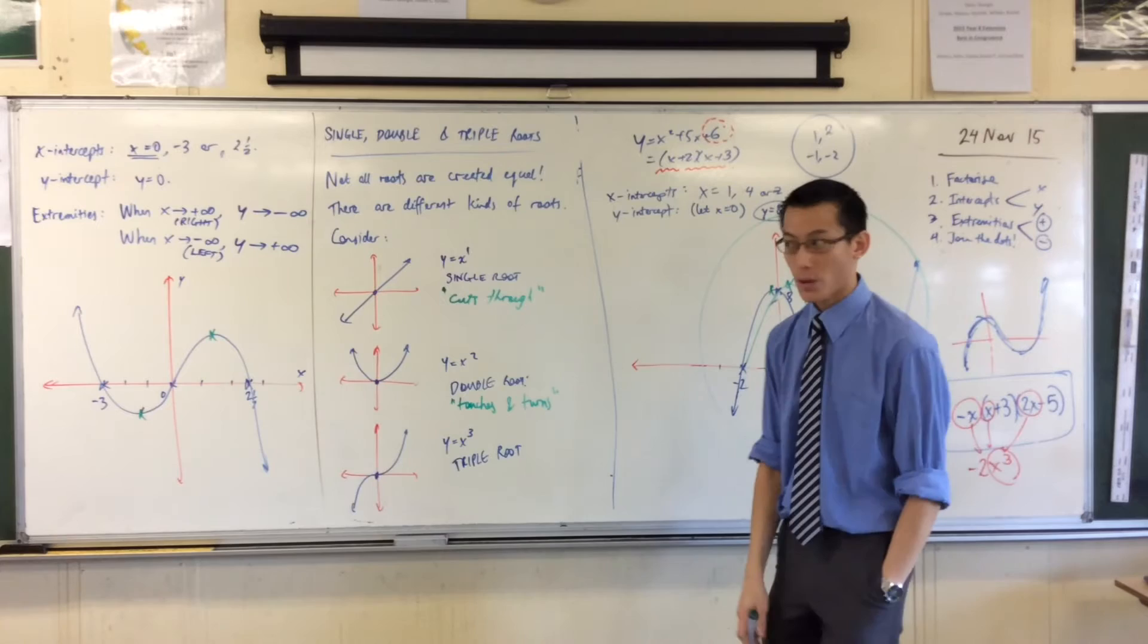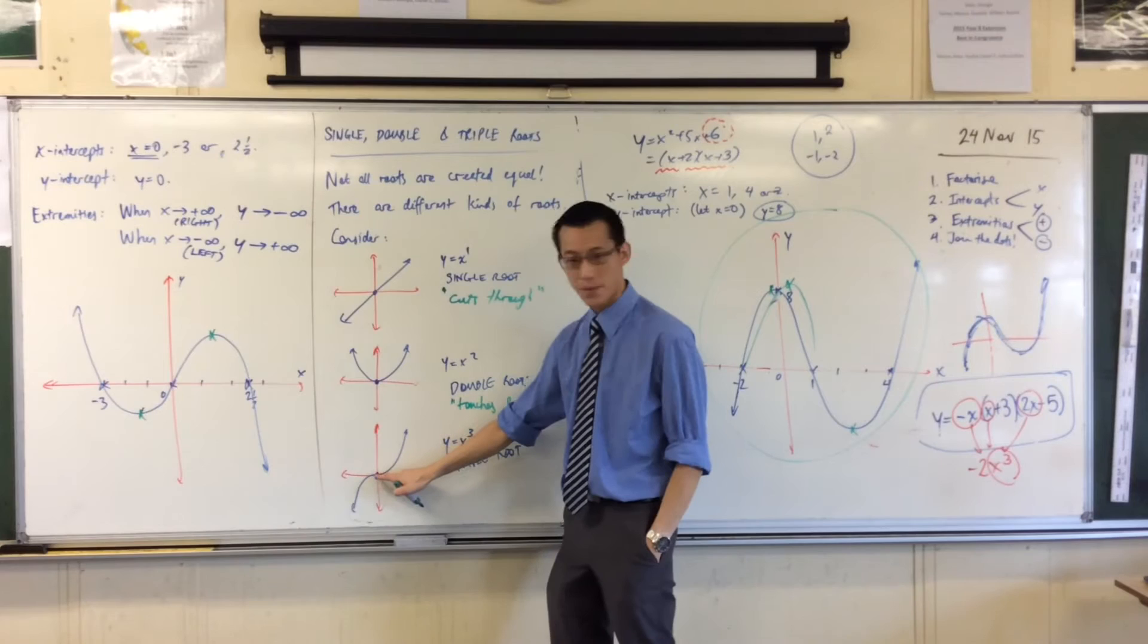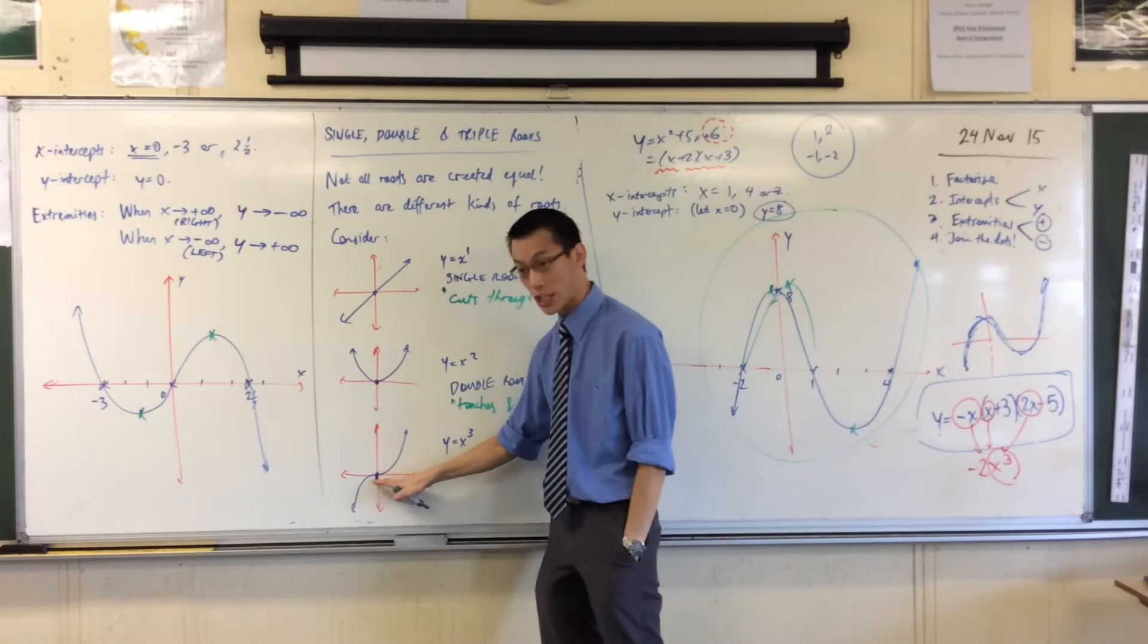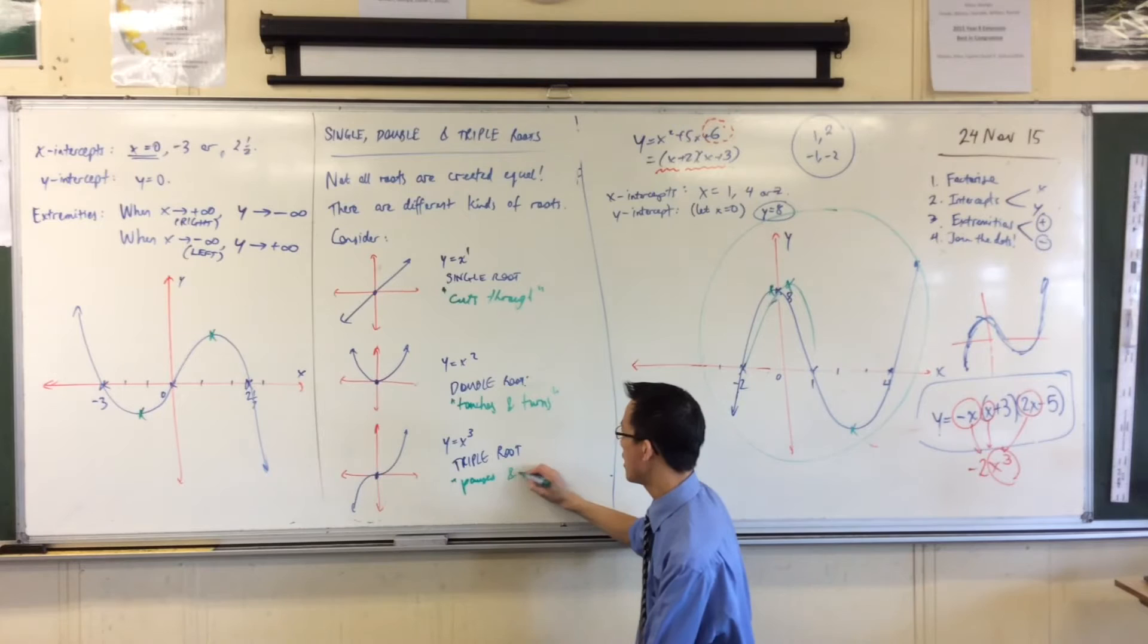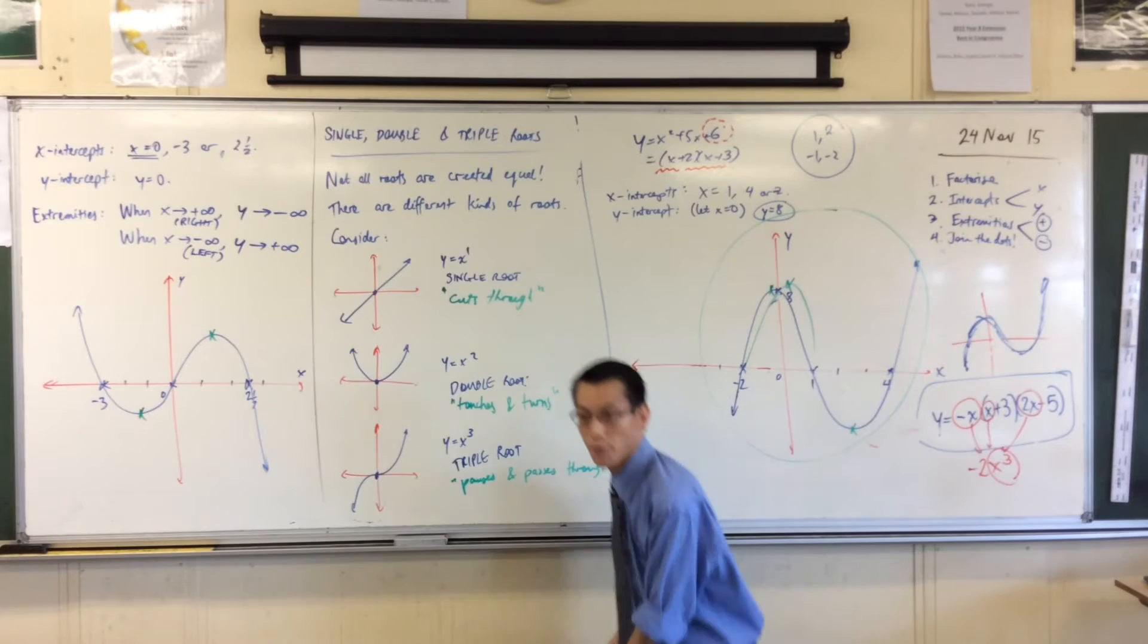Now, when you have a look at this one, it doesn't just cut through. In fact, it does something quite different. It comes down, it slows down, it just touches. Do you notice that? It just sort of hovers there, and then it turns around. So the way that I would explain this is that it touches the axis, it touches, and then it turns. That's what a double root is doing. You see, it comes down, it stops, and then it goes back up.